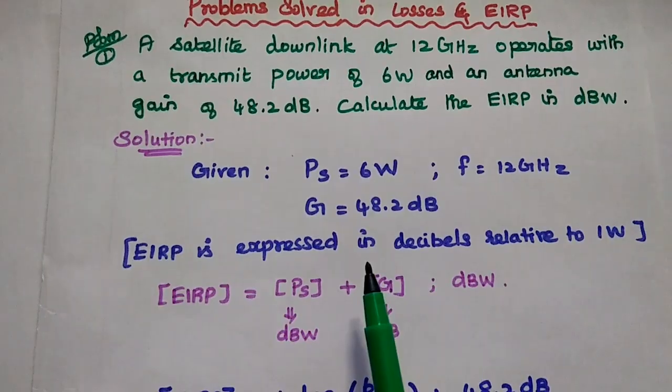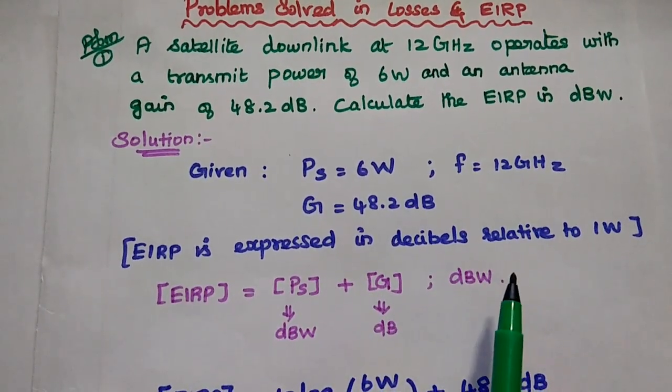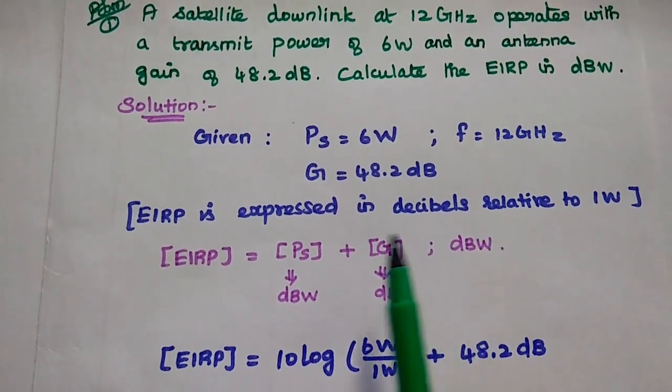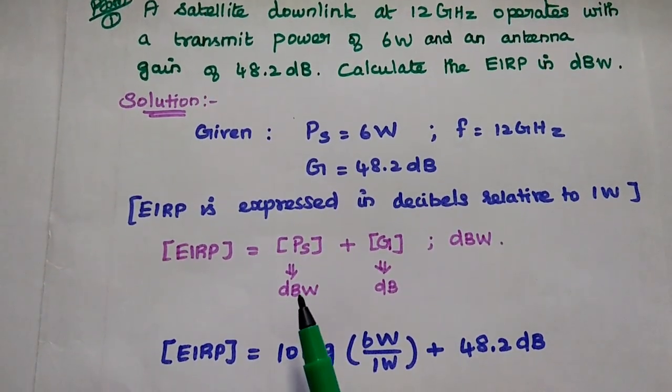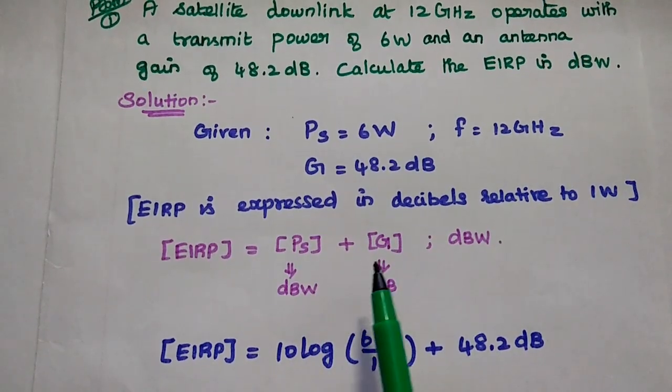Here EIRP is always expressed in decibels relative to 1 Watt. That will be used in the formula here. This is the general formula of EIRP: that is equal to PES plus G.